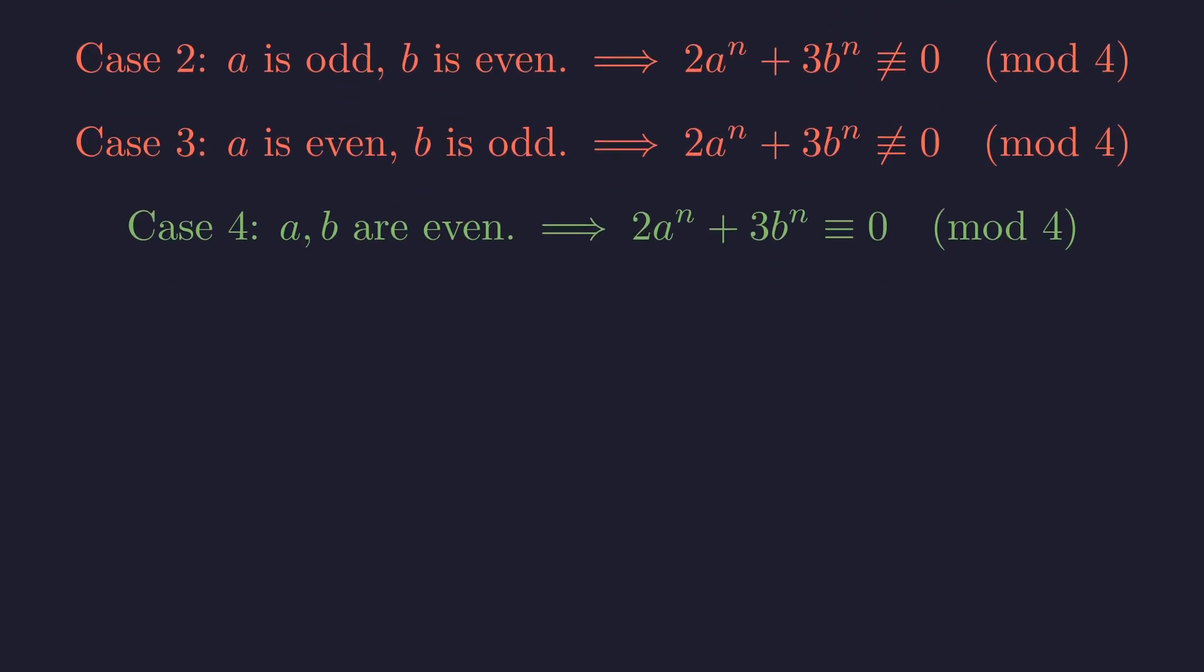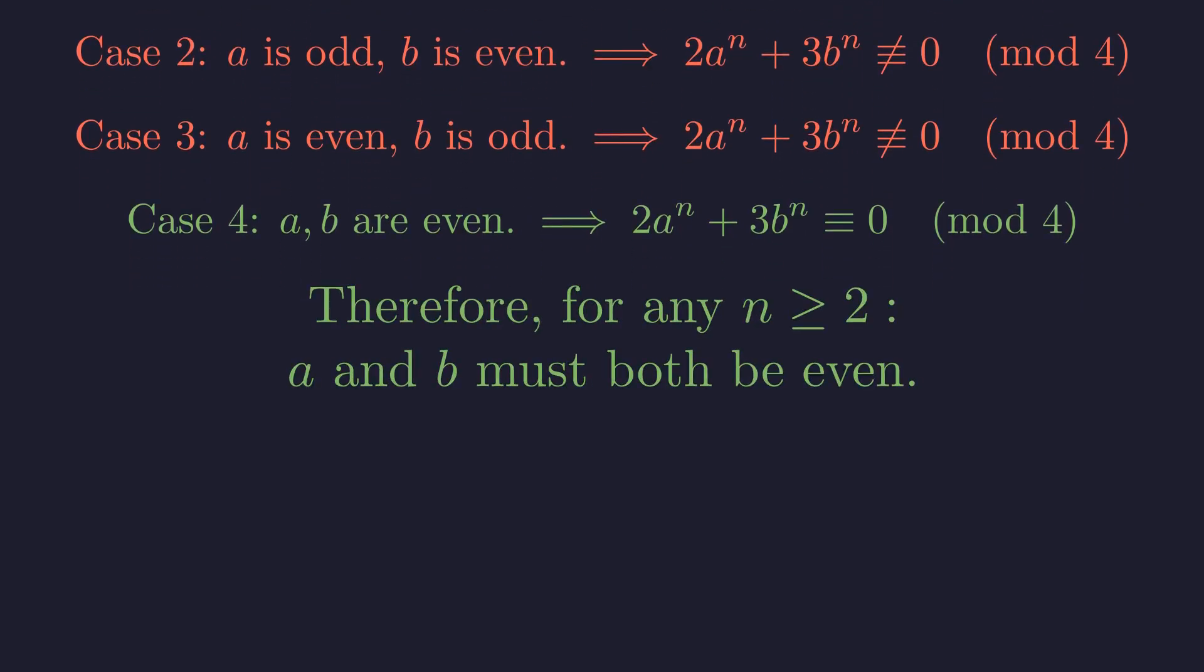The only possibility that satisfies the condition modulo four is that both a and b must be even. This gives us a fundamental constraint: for any n greater than or equal to two, both a and b must be even. We'll use this in our analysis of specific cases.